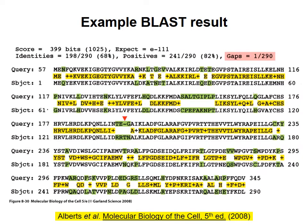For example, here a query protein sequence has been matched with a particular protein found in the database. The yellow highlighting indicates residues that are identical or have similar chemical properties in the two sequences, while the green highlighting indicates residues that are dissimilar. In this example, 68% of the residues are identical and 82% are similar. The expectation value gives an estimate of the likelihood that a match this good will occur by chance — the lower the number, the less likely that the two sequences are actually unrelated. The expectation value here, 10 to the power of minus 111, is very low indeed.